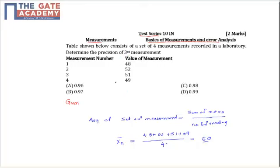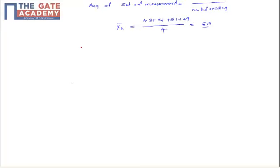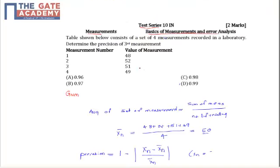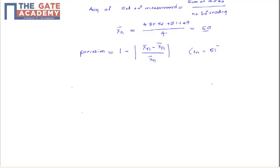To find the value of precision at the measurement that is 51, the formula for precision is: precision = 1 minus modulus of (Xn minus X̄) divided by X̄, where Xn is the specific measurement value and X̄ is the average.